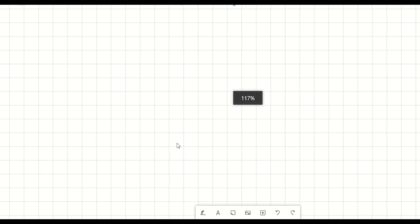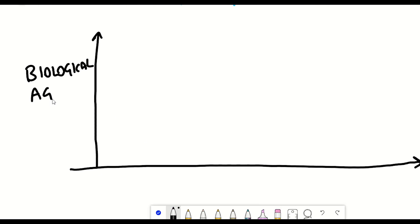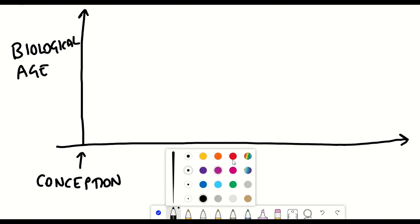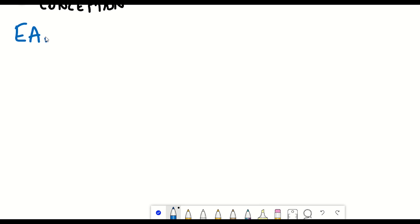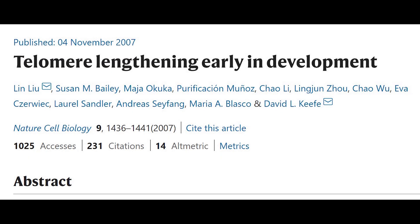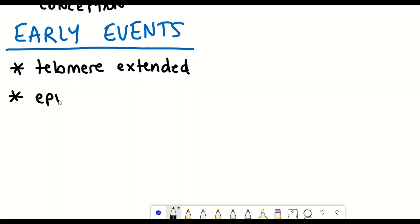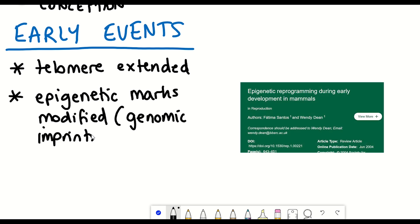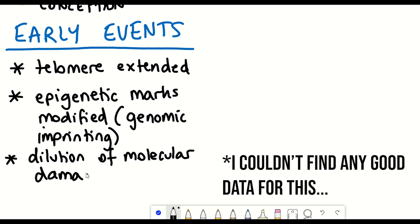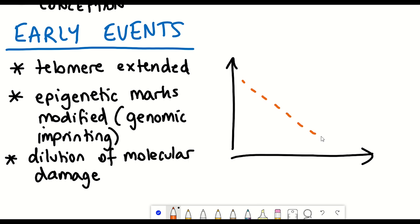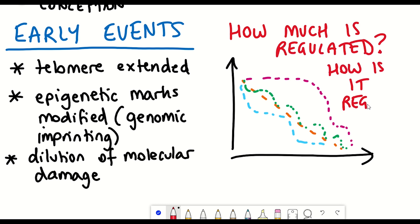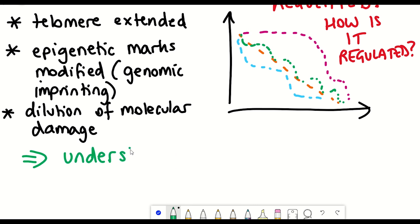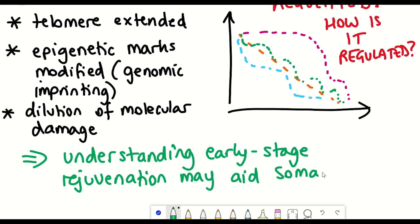On our hypothetical graph, if we start at conception, due to the presence of some damage, the biological age will not be effectively at ground zero. During the very early stages post-conception, the zygote undergoes a variety of changes: telomeres are extended, epigenetic marks are erased, and genomic imprinting from the different gametes is reset. Moreover, early cell divisions may allow for clearing and dilution of molecular damage. It's still unclear whether these processes are linear, gradual, or occur in waves, and how much they are regulated.